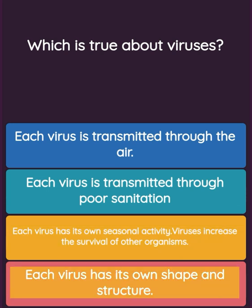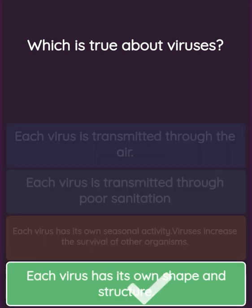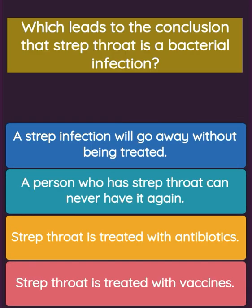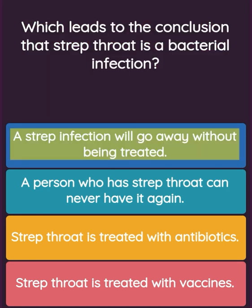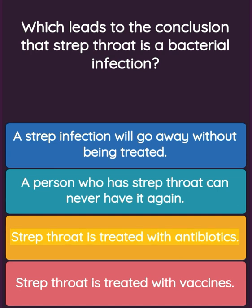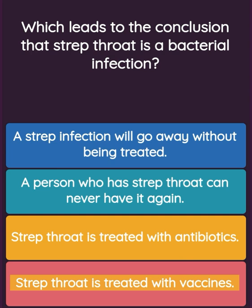Question: Which leads to the conclusion that strep throat is a bacterial infection? Option one: a strep infection will go away without being treated. Option two: a person who has strep throat can never have it again. Option three: strep throat is treated with antibiotics. Option four: strep throat is treated with vaccines.